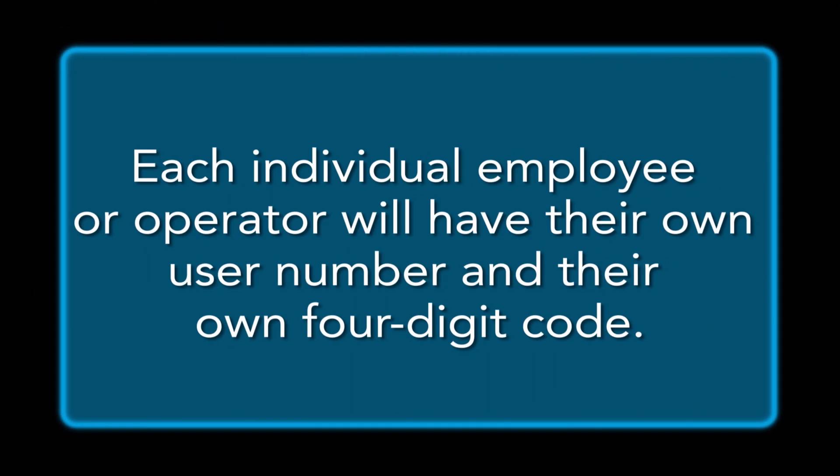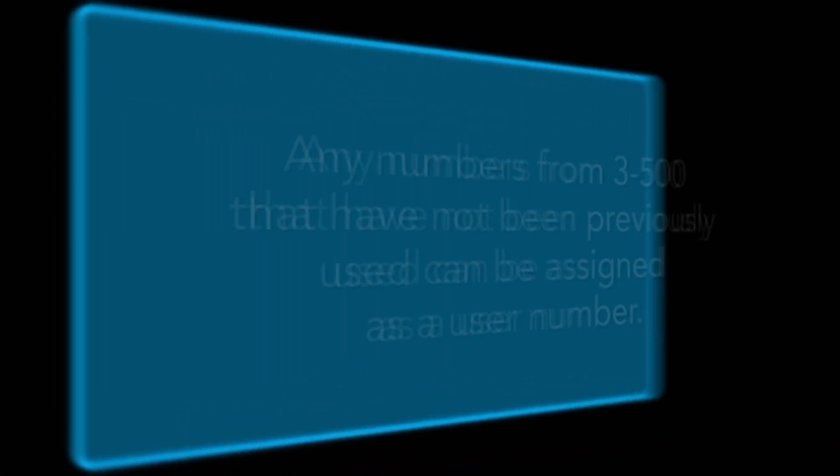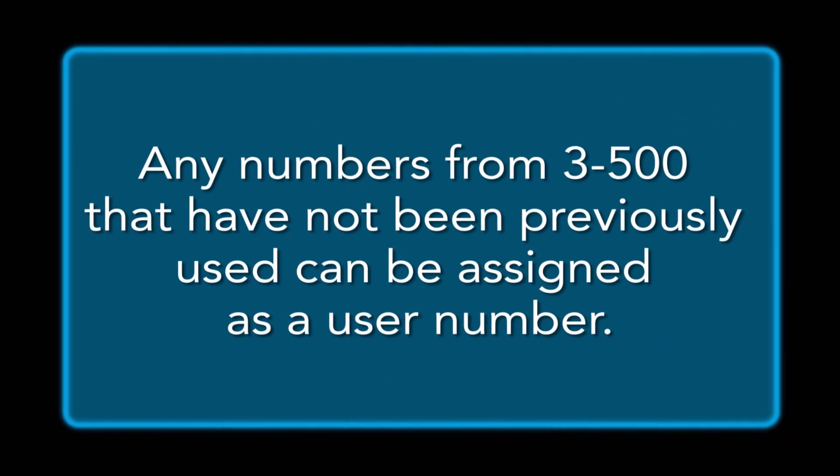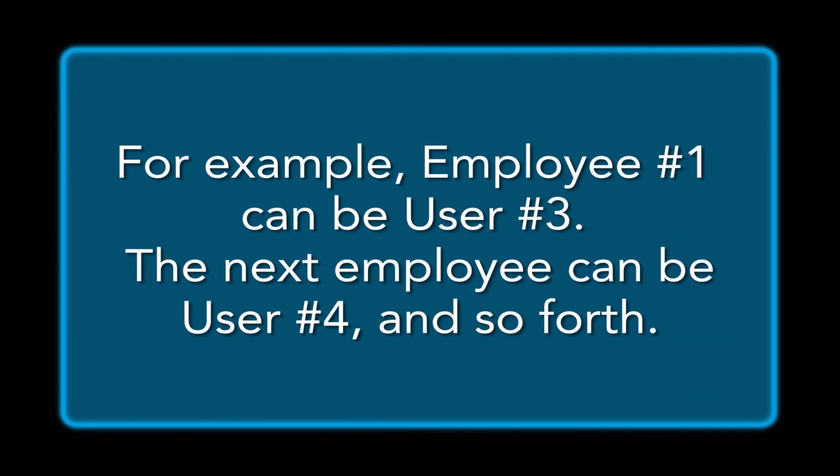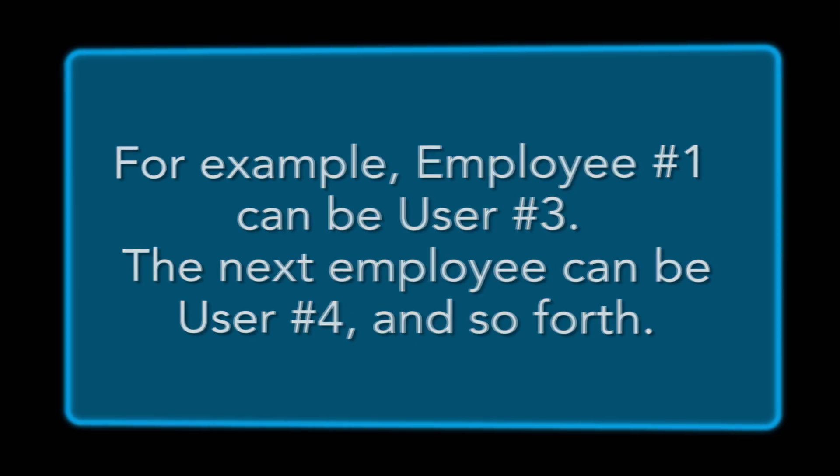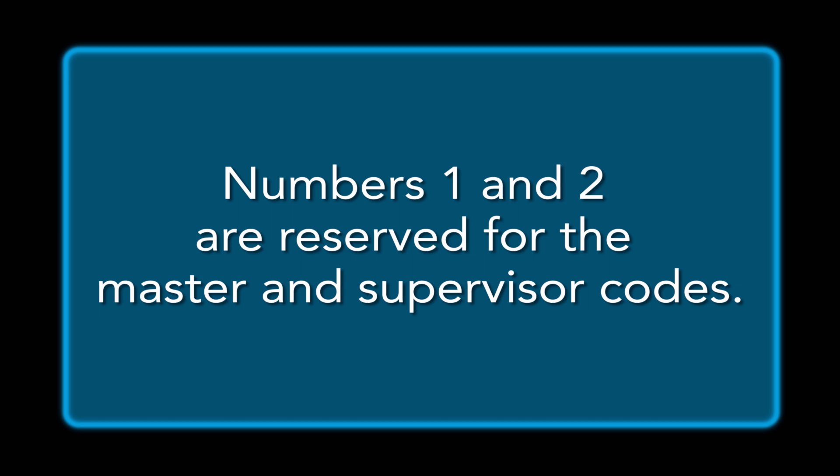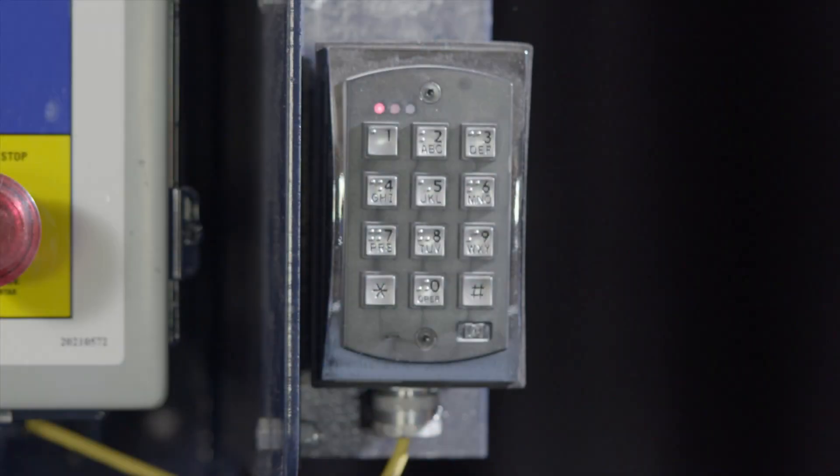Each individual employee or operator will have their own user number and their own four-digit code. Any numbers between 3 through 500 that have not been previously used can be assigned as a user number. For example, employee number 1 can be user number 3. The next employee can be user number 4, and so forth. Numbers 1 and 2 are reserved for the master and supervisor codes. Let's now begin setting up a new user code.